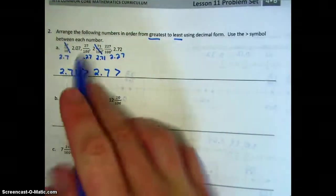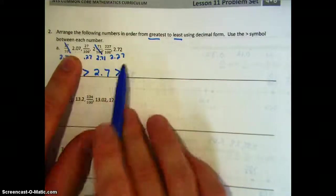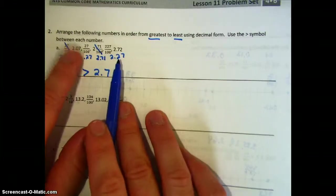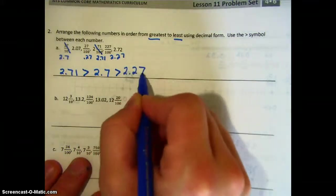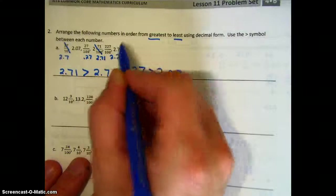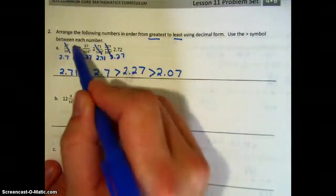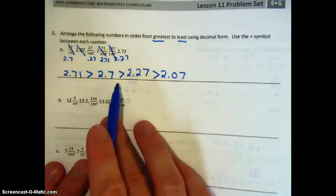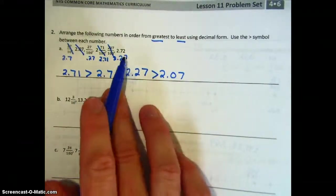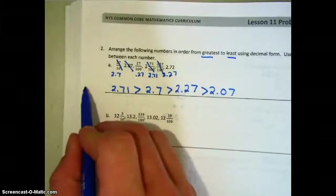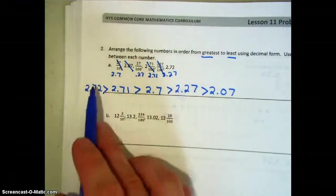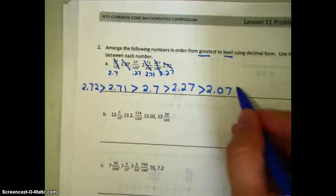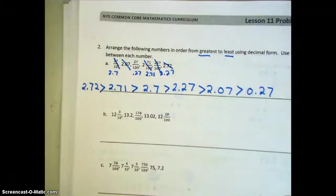Continuing on with the remaining numbers: one has a two in the tenths place, whereas the other only has a zero. So two and twenty-seven hundredths comes next, followed by two and seven-hundredths. Now we notice we left out two and seventy-two hundredths — since seventy-two hundredths is greater than seventy-one hundredths, we squeeze it in before that. And finally all that's left is twenty-seven hundredths, giving us our complete greatest-to-least ordering.